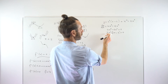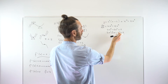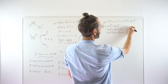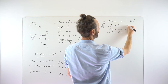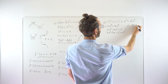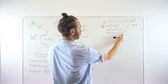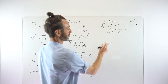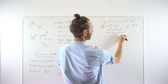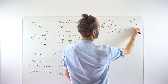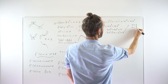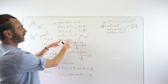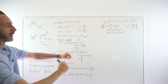We pull out a common factor of 2x squared, leaving 2x − 3 inside the bracket. Setting each factor to zero: 2x squared equals zero gives x equals zero, and 2x − 3 equals zero gives x equals 3/2. Those are our two x-coordinates for the stationary points.